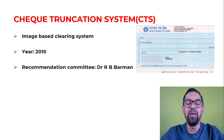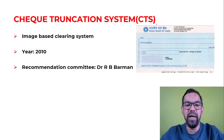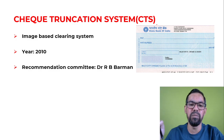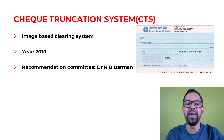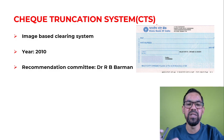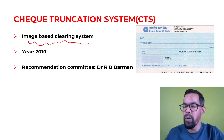Image Based Clearing System means previously a cheque was cleared on a physical basis. For example, if a person issued a cheque in Mumbai and the payee's account is in Delhi, we had to physically send that cheque from Mumbai to Delhi, then the bank would process it for clearing. But now with the CTS system, it is image-based — there is no physical movement of cheques.